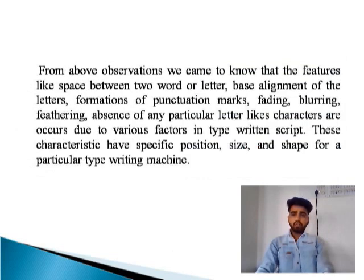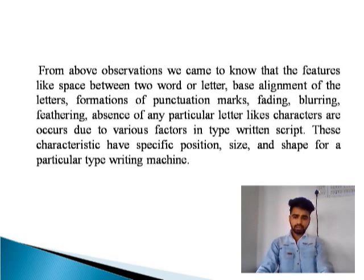From the above observation, we come to know that features like space between two words or letters, base alignment of a letter, formation of marks, fading, blurring, and absence of any particular letter or character occur due to various factors in a typewriting script. These characters have a specific position, size, and shape for a particular typewriting machine.